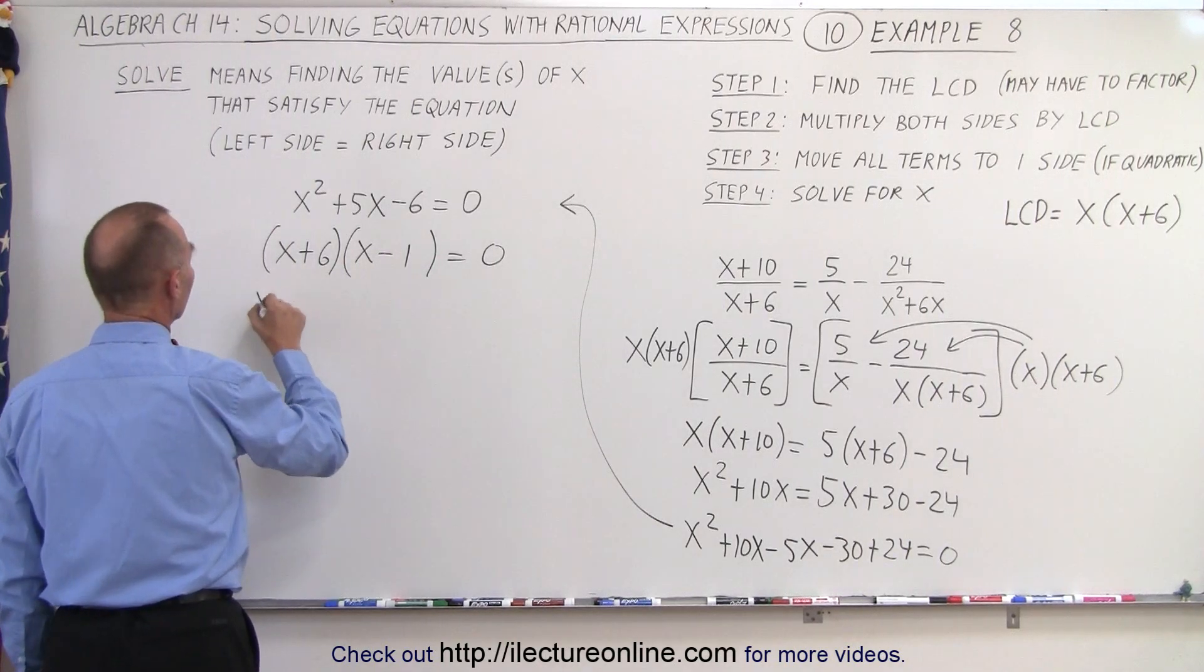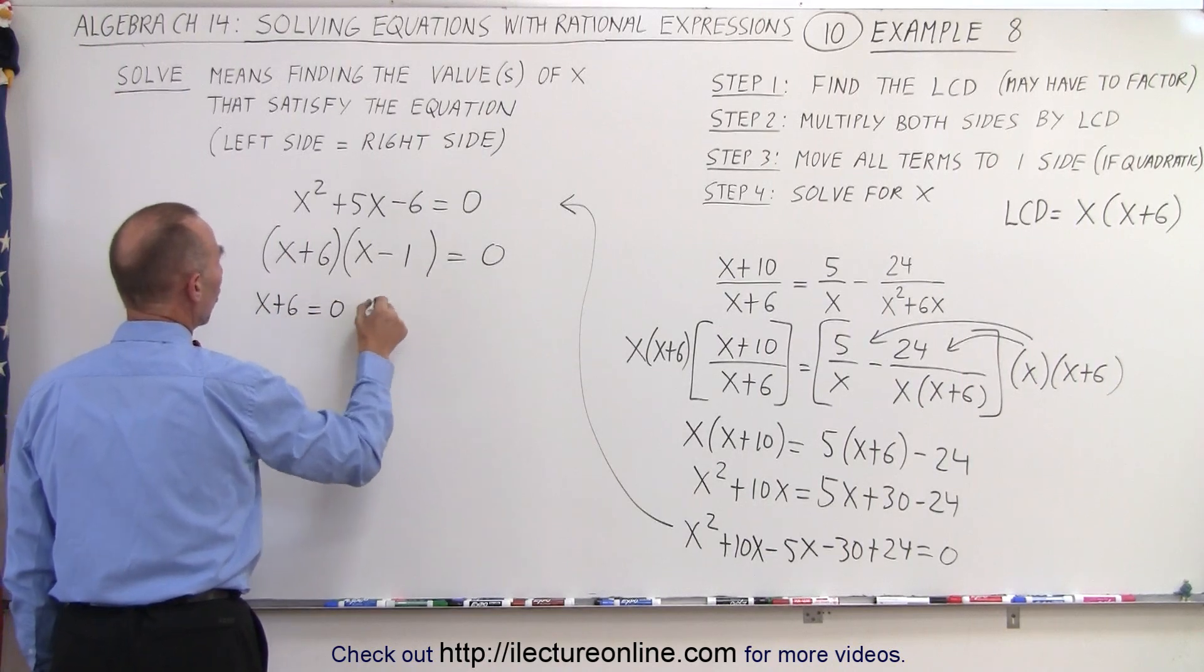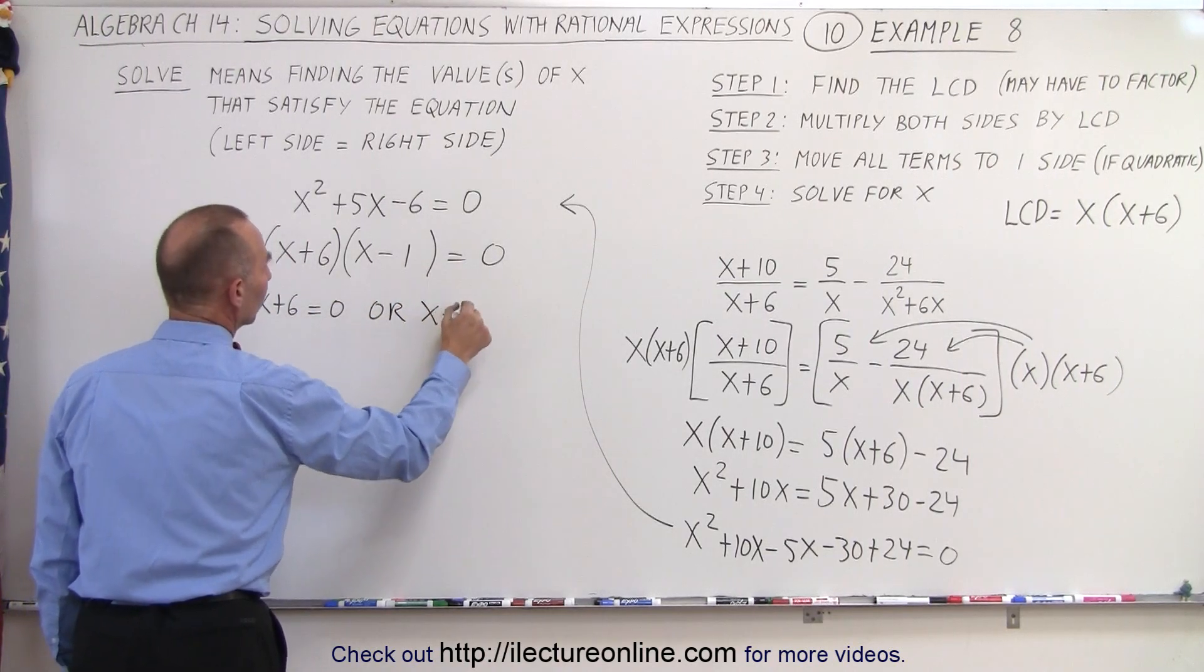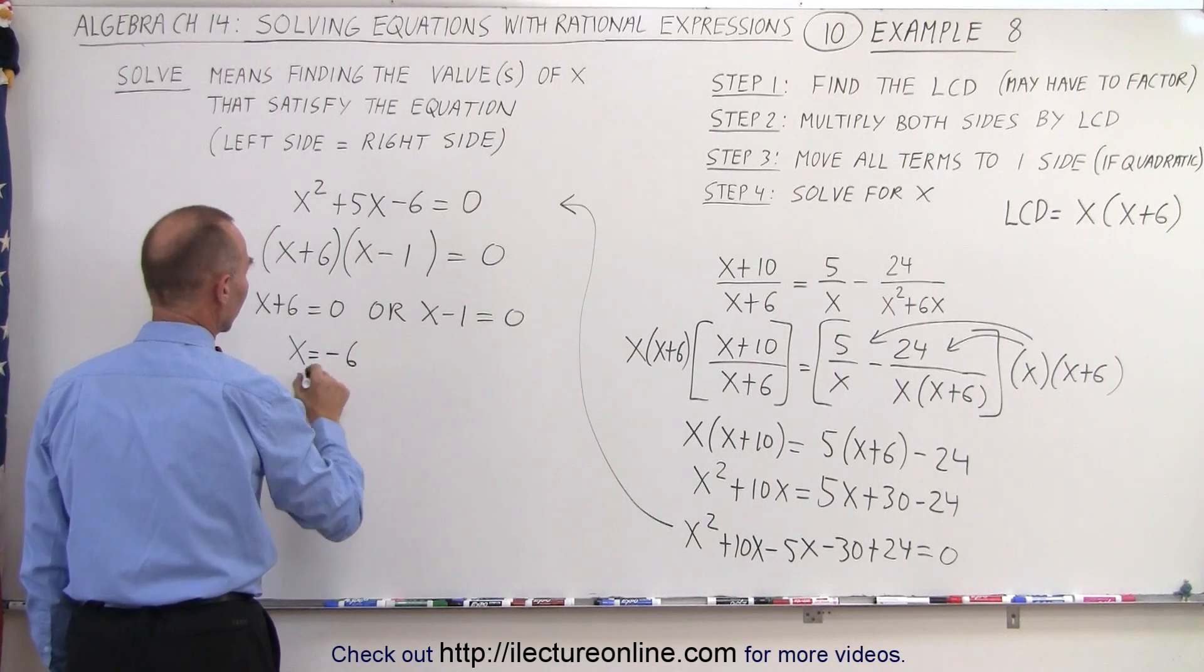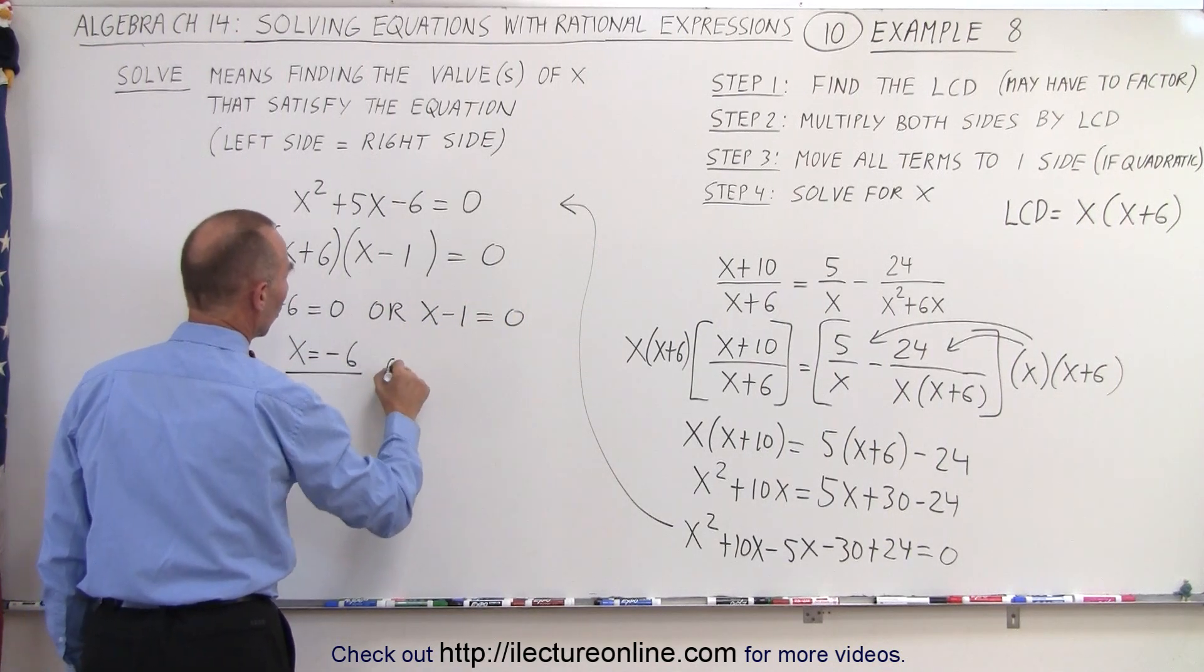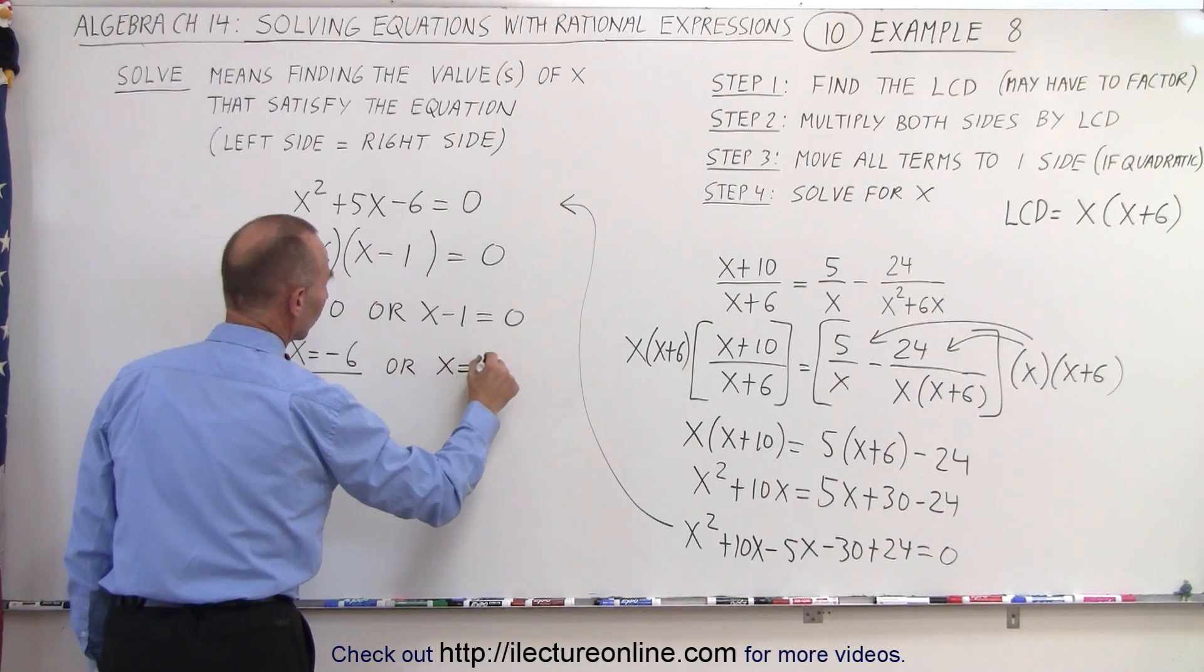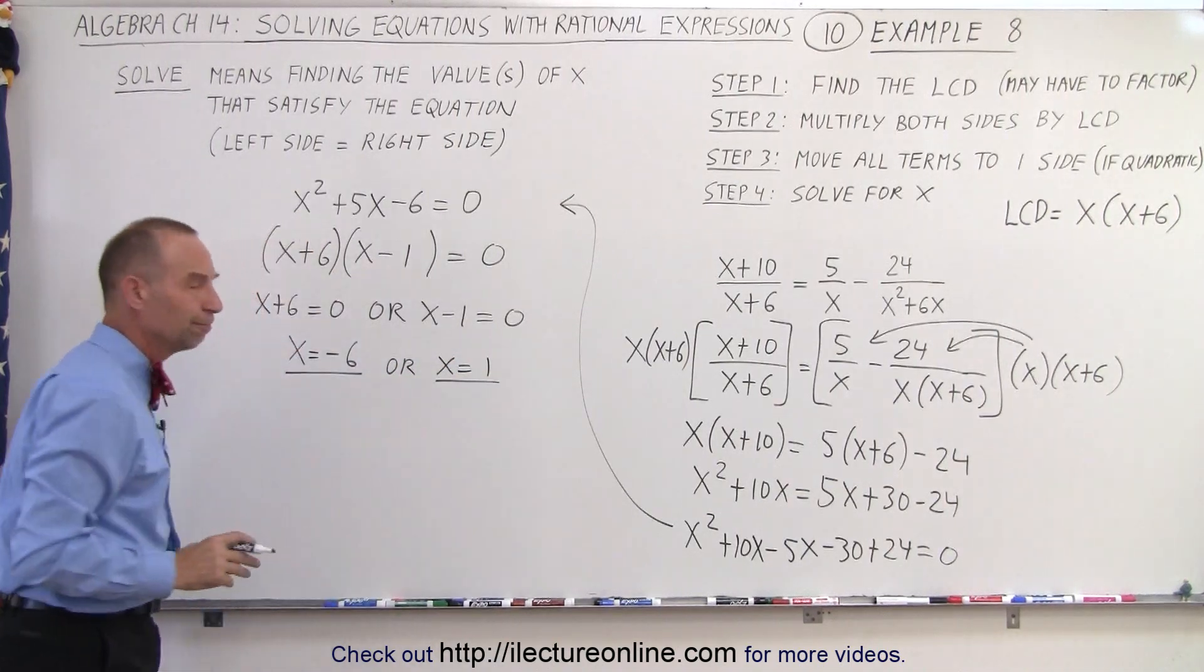That means either (x+6) = 0 or (x-1) = 0. Which means x = -6 is one of our solutions, or x = 1 is one of our solutions. But we're not done yet.